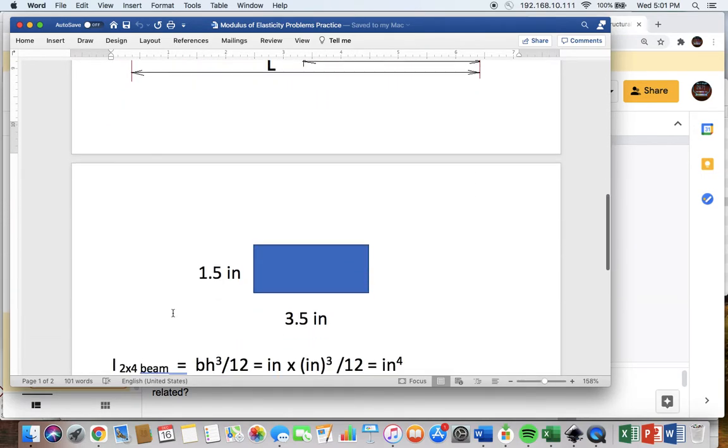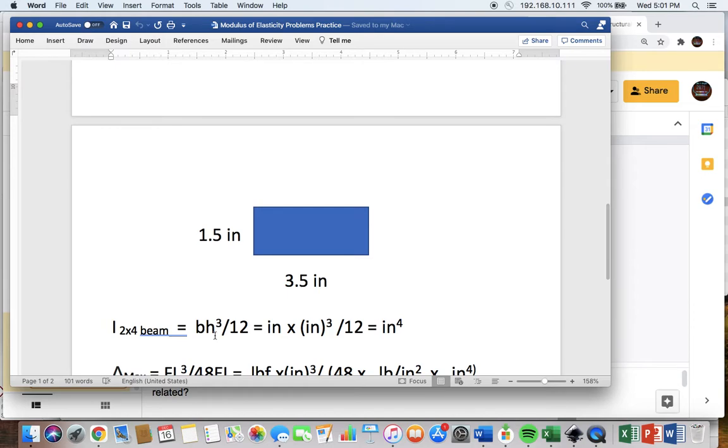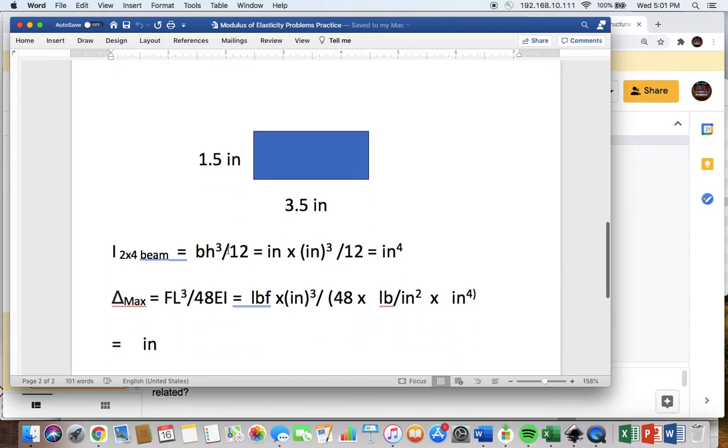You would take the base times the height cubed, divide by 12. So if we put the base as 3.5 inches, and then we multiply it by the height, 1.5 inches cubed, and then divide by 12, we get 0.98 inches to the fourth.